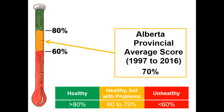Riparian areas change naturally over time. What we do in them and in the watersheds that surround them can speed up many of these changes. Sometimes the speed and degree of change is greater than the natural resiliency and healing rate of the riparian area. Development can cause streams to erode their banks faster. By looking at how these uses impact riparian areas and their function, we can better utilize management tools to improve riparian health.